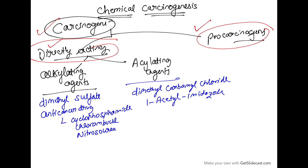Pro-carcinogens are those which require metabolic activation to become carcinogens. Now talking about directly acting carcinogens, they could be alkylating agents or acylating agents. Examples of alkylating agents are dimethyl sulfate and some anti-cancer drugs like cyclophosphamide, chlorambucil, and nitrosourea. Acylating agent examples are dimethyl carbamyl chloride or 1-acetyl-1-imidazole.